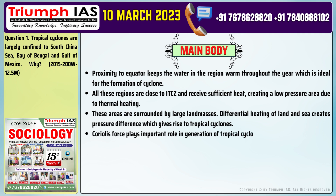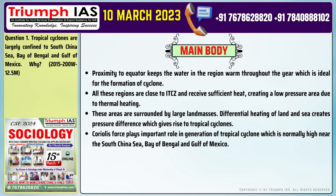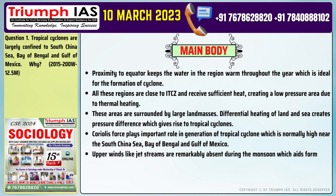Number 5: Upper winds like jet streams are remarkably absent during the monsoon, which aids formation of tropical cyclones over Bay of Bengal. Number 6: Frictional force between air and sea is comparatively higher in the tropical areas. Number 7: Disruption of water circulation caused by El Niño also aids formation of cyclones in the region.